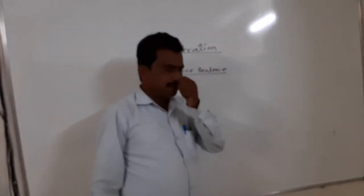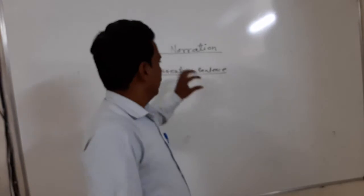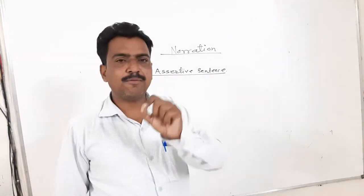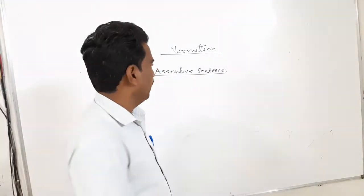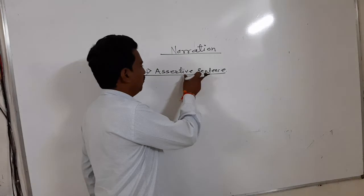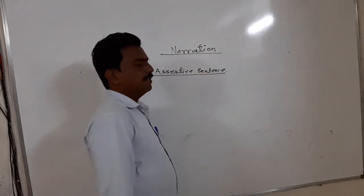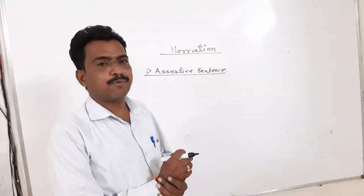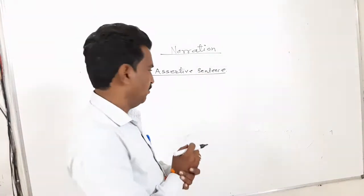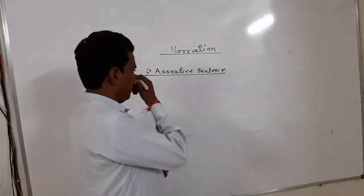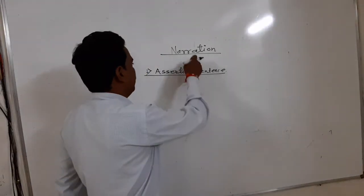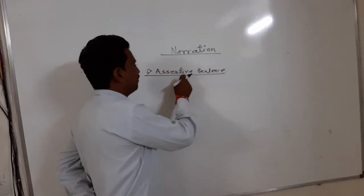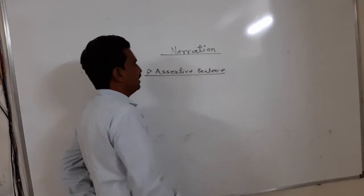We have already seen reporting speech. In the reporting speech, there is a kind of sentence. And according to the kind of sentence, we have to use the conjunction as well as the reporting verb. So in the reporting speech, there is a kind of sentence — which kind of sentence?